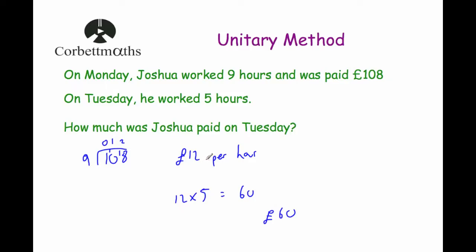Using the unitary method, we divided £108 by nine to work out how much Joshua is paid for one hour, and then multiplied by the number of hours he worked on Tuesday. If he worked five hours we times by five; if he worked 15 hours we times by 15, and so on.